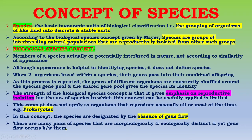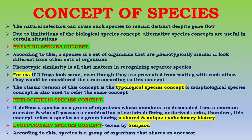There are many pairs of species that are morphologically and ecologically distinct and yet gene flow occurs between them. Natural selection can cause such species to remain distinct despite gene flow, and this represents a further limitation of the biological species concept.